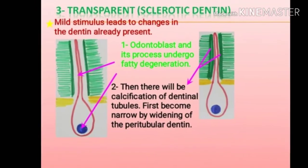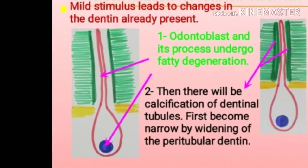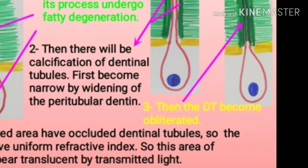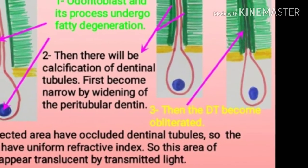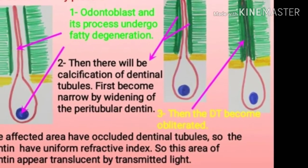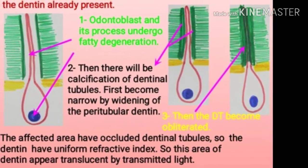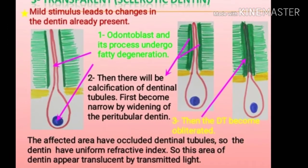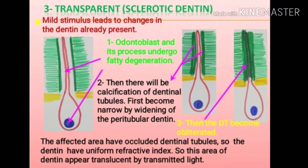Transparent sclerotic dentine: When a stimulus leads to changes in the dentine already present, the odontoblast and its processes undergo fatty degeneration. There will then be calcification of the dentinal tubules — they first become narrow by widening of the peritubular dentine, and then the dentinal tubules become obliterated. The affected area has occluded dentinal tubules, so the dentine has a uniform refractive index, causing this area of dentine to appear translucent by transmitted light.